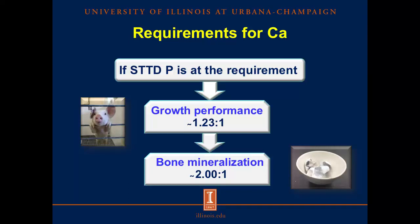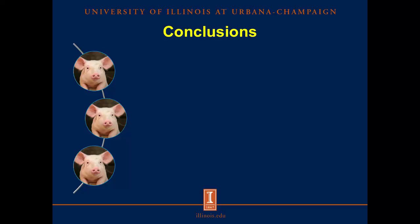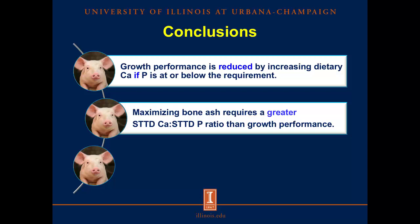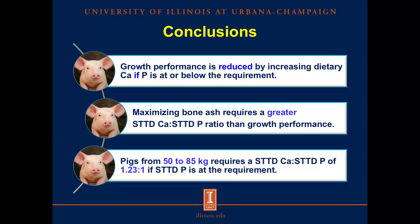To summarize the results: if phosphorus is at the requirement, the ratio of digestible calcium to digestible phosphorus that maximizes growth performance is around 1.23 to 1, based on average daily gain and final body weight. To maximize bone mineralization, a ratio around 2 to 1 is needed. This difference means that after the growth performance requirement is met, calcium and phosphorus are used to synthesize more bone tissue. In conclusion, growth performance is reduced by increasing dietary calcium if phosphorus is at or below the requirement. Maximizing bone ash requires a greater calcium to phosphorus ratio than growth performance. Pigs from 50 to 85 kg require a ratio between digestible calcium and digestible phosphorus of 1.23 to 1 when digestible phosphorus is at the requirement.